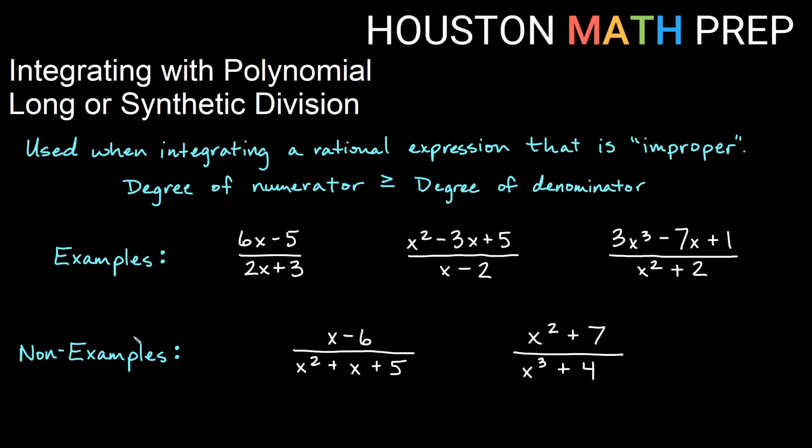Hey everyone, welcome back to our video on integrating rational expressions with polynomials using long or synthetic division. The rule for this when we're integrating is we need them to be improper. In other words, we need the degree of the numerator to be at least as much as the degree of the denominator. If you recall, degree simply means the highest power of x if you look in your polynomial.